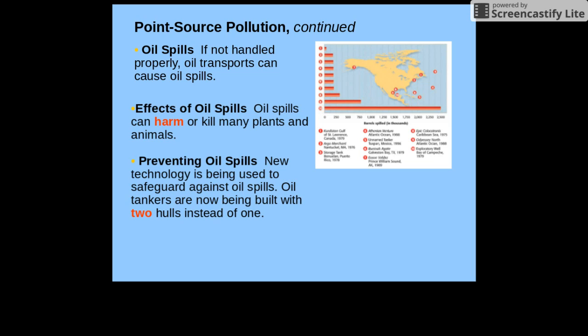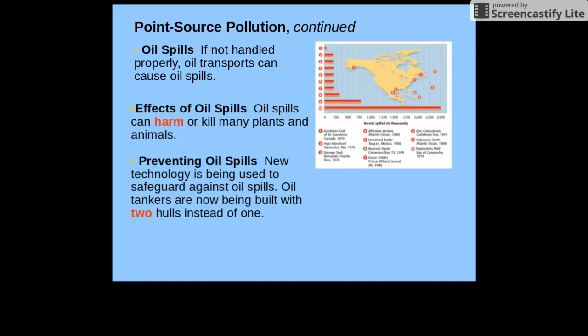Oil spills would also be considered point source pollution. If oil spills are not handled properly, they can harm or kill many plants and animals. There is new technology being used now to safeguard against oil spills — oil tankers are now being built with two hulls instead of one, so even if the first hull is breached, they still have another.